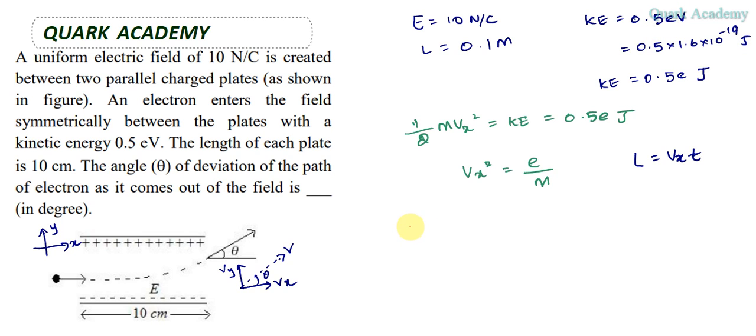In the same time T, the electron acquires a Y component of speed using the equation V equals U plus AT. The acceleration A can be found from the force. Force equals E times e for a charged particle in an electric field. Also, force equals M times A, so A equals eE by M.